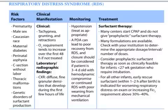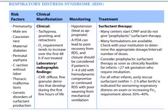With C-section, the baby comes out easily, so the fluid is retained in the lungs and causes respiratory distress syndrome. Additional risk factors include thoracic malformations and genetic disorders of surfactant production. The clinical manifestations are tachypnea, grunting, and retraction — remember, these three are very important.